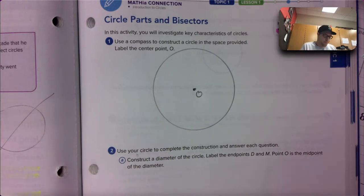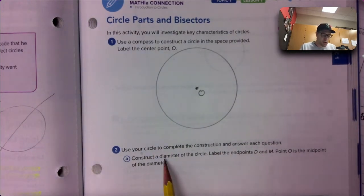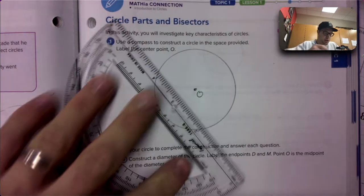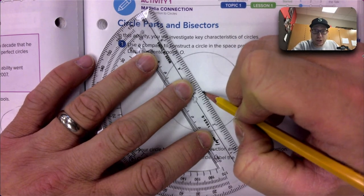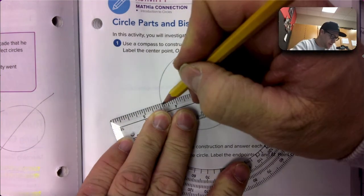Use your circle to complete the construction and answer each question. Construct a diameter of the circle. So to do that, straight edge, draw, making sure that I'm putting my straight edge on the actual center of the circle, and then draw a line all the way across. That's a diameter.